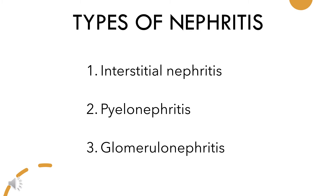In interstitial nephritis, the spaces between the kidney tubules become inflamed. On the other hand, in pyelonephritis, there is inflammation in the kidney usually due to a bacterial infection. And glomerulonephritis means there is inflammation in the glomeruli, which are the tiny clusters of capillaries that transport blood.